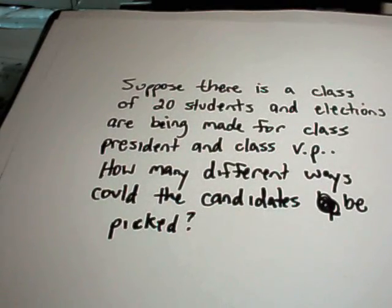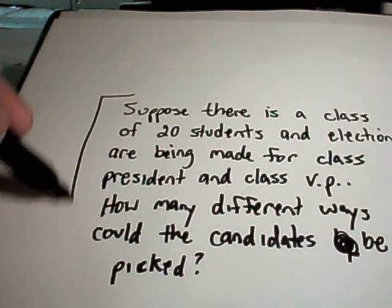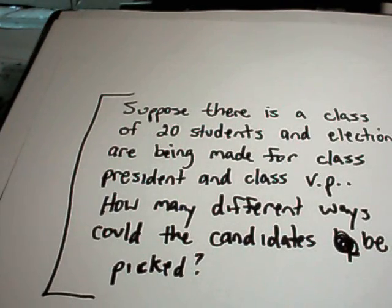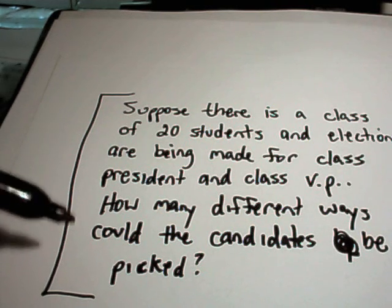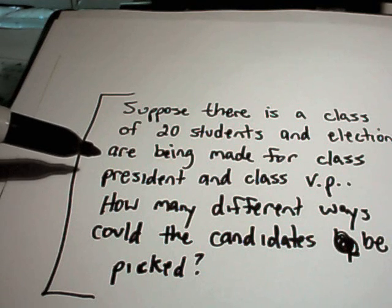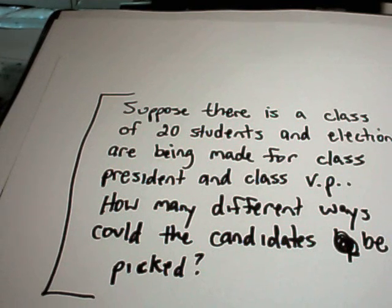Okay, so in this problem, it says suppose that there are 20 students and we're going to pick somebody for president and for vice president of our class. And we want to know how many different ways we could have a ticket with a different president and vice president.